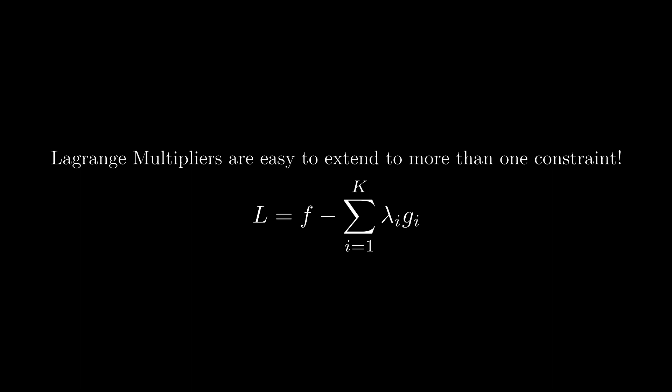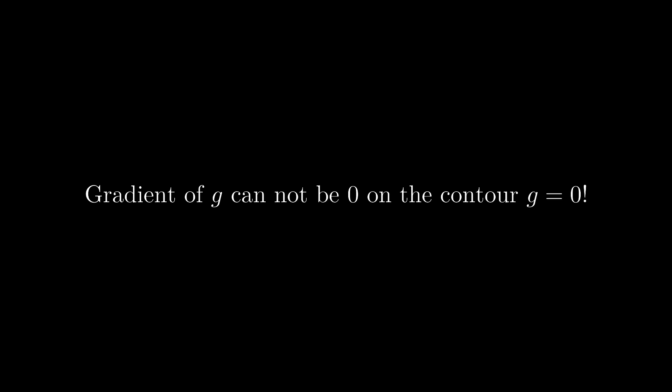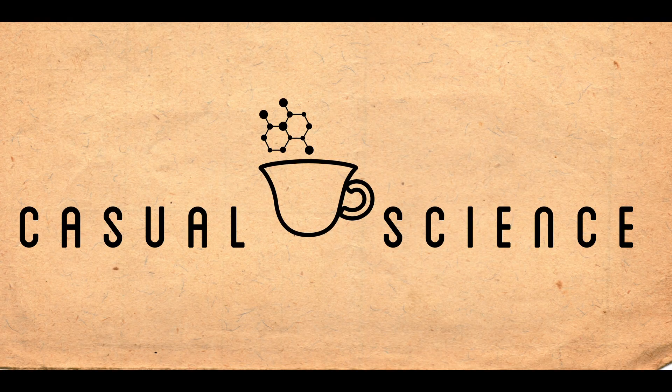If you understood most of the stuff in this video, you should be able to figure out why that works. Second, because this whole scheme is based on finding situations where the gradients align, you can run into trouble when the gradient of g happens to be zero on the contour where g equals 0. If this is the case, you'll have to come back and manually check those points for extrema of f. Anyway, thank you so much for watching. I hope you enjoyed the video and learned something.